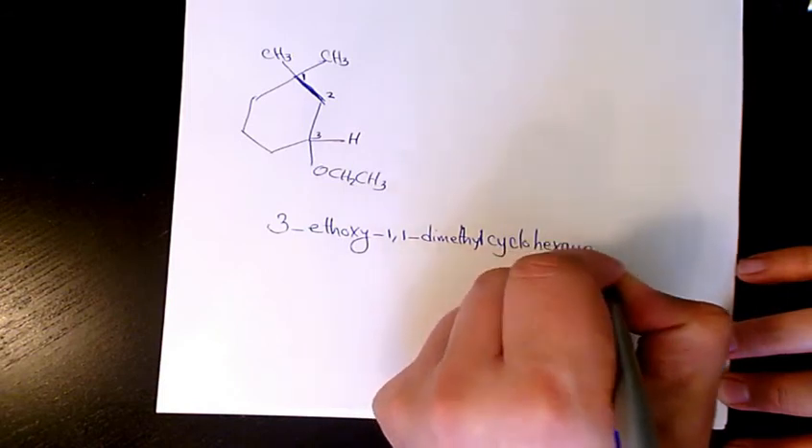And we have two methyl here, so it's gonna be 1,1-dimethylcyclohexane. That's gonna be the name of this compound.